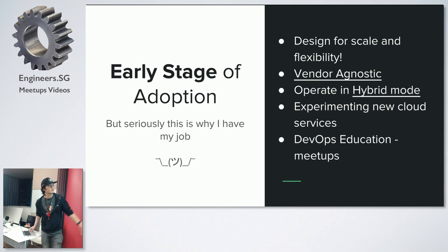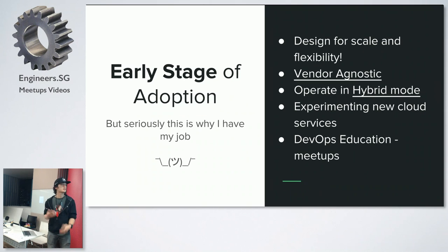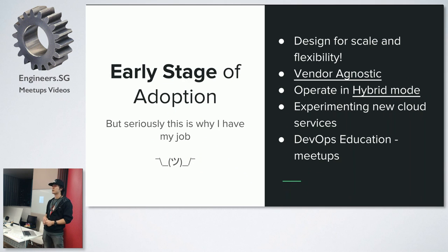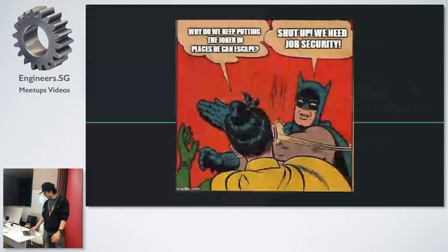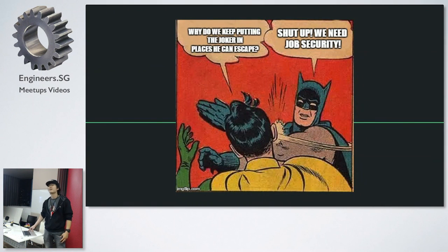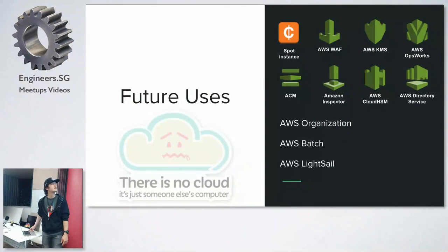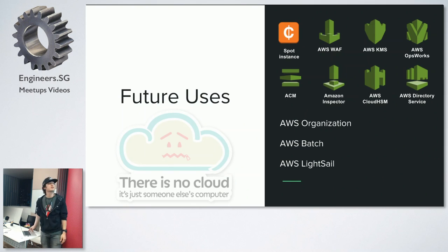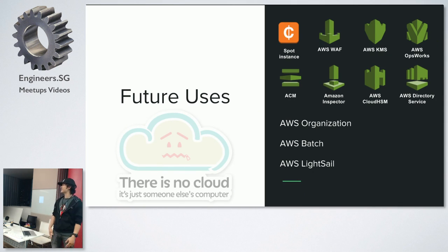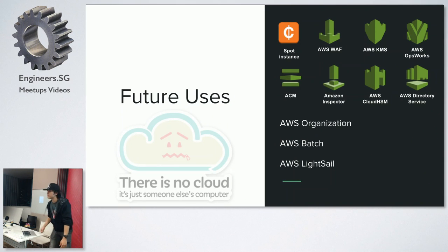In the long run, we are designing for scale and flexibility, trying to be vendor agnostic since we're the public sector. Experimenting with new cloud services is always exciting. I'd also like to see more people attending DevOps meetups and getting hands-on education. Future things I want to implement in my organization: saving money, managing secrets, and automation. And for AWS Organizations — the control plane with one main account — I hope that becomes available in Singapore.